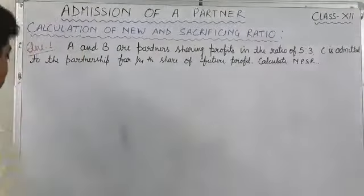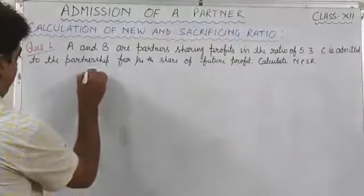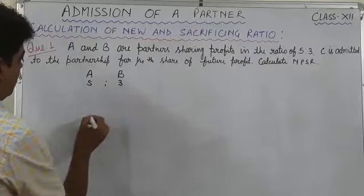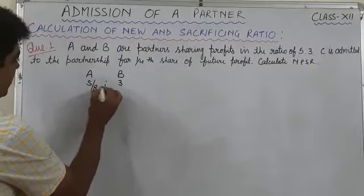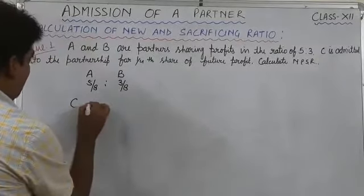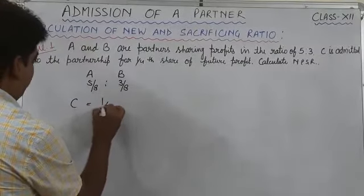Let's see how we will calculate new profit sharing ratios. A and B are partners and their profit sharing ratio is 5:3. 5:3 means 5/8 and 3/8, and C is admitted for 1/4 share.